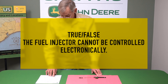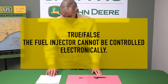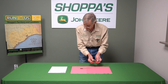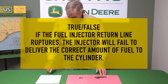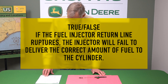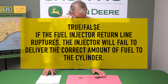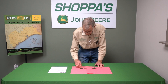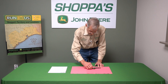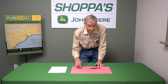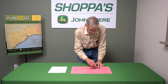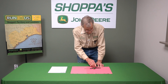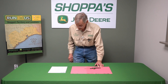The next statement: this fuel injector cannot be controlled electronically. That's true — this is strictly a mechanical fuel injector. Next statement: if the fuel injector return line ruptures, the injector will fail to deliver the correct amount of fuel to the cylinder. That is inaccurate. The return coming through here, at the top, will not influence anything within this chamber, so that's not going to affect the delivery of the fuel injector to the combustion chamber.